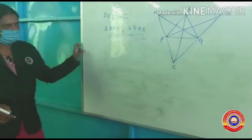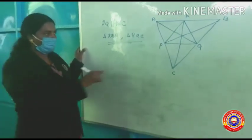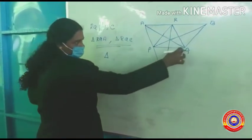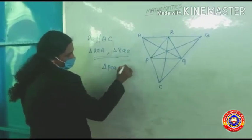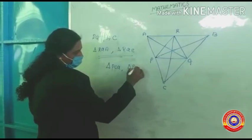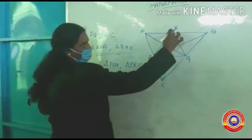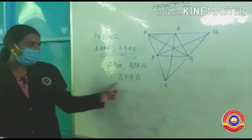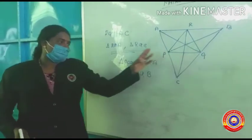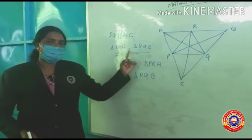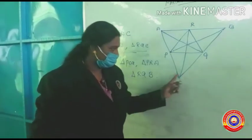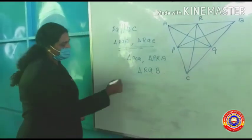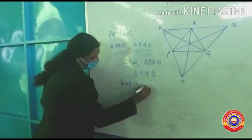There are three more triangles having the same area as that of triangle PQR. Do you know which they are? Yes, right — triangle PCQ, triangle PRA, and triangle RQB. Because the lines parallel to each side of the blue triangle through the opposite vertex are drawn to make the big triangle, these three triangles also have the same area.